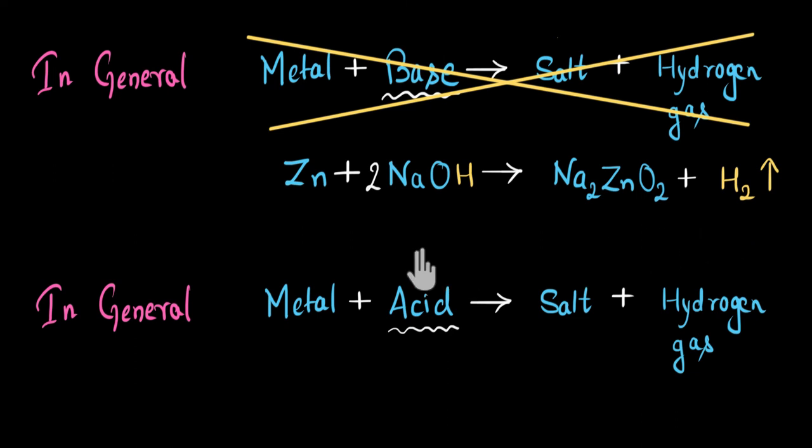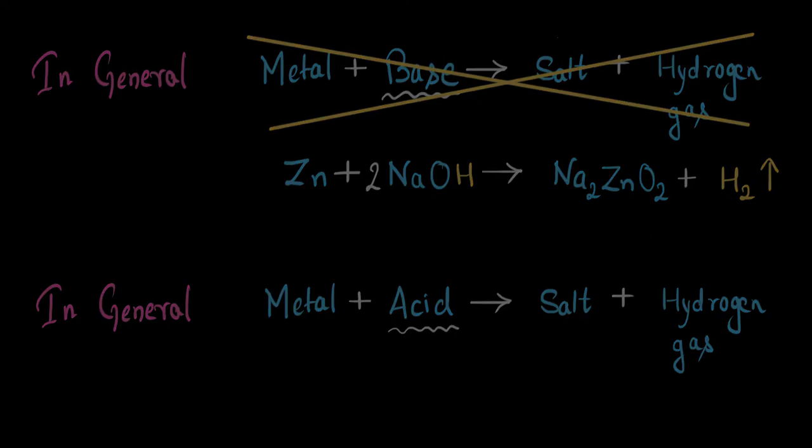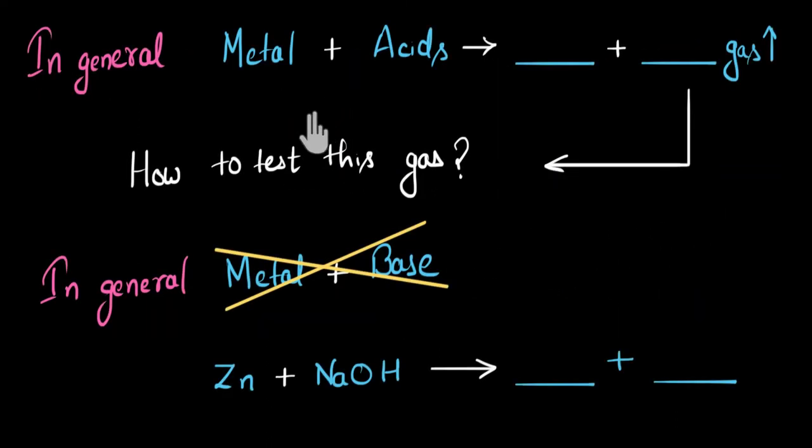So yes, there are very few metals that will react with the base to give us salt and release hydrogen gas. Now with this, let's summarize the video. In this video, we saw what products will be formed when a metal reacts with an acid, and what gas will be released. We also saw how to test for this gas.